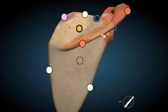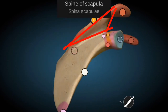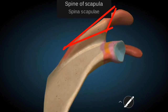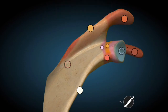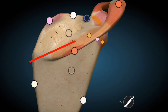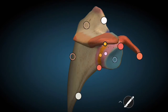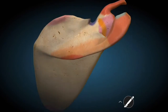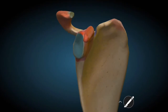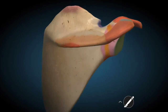The spine of the Scapula Bone is a triangular-shaped process which starts from the medial border of the Scapula Bone and runs laterally to form the acromion process on the lateral side. The acromion process is a continuation of the spine of the Scapula Bone.